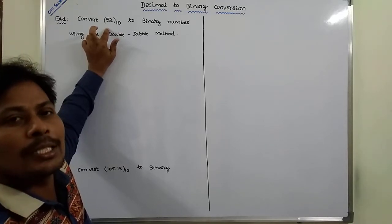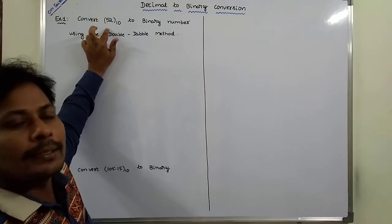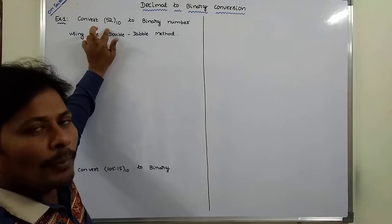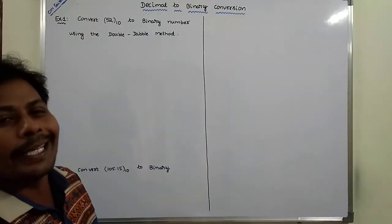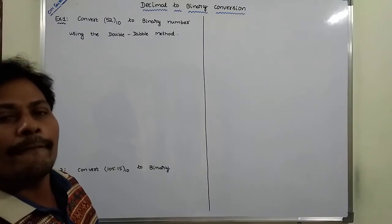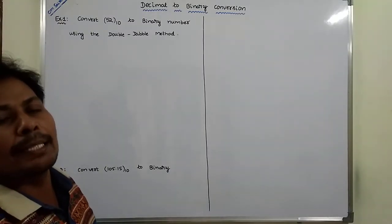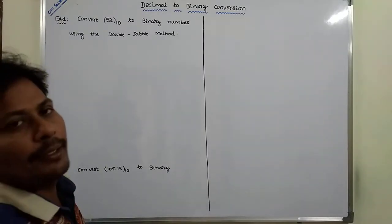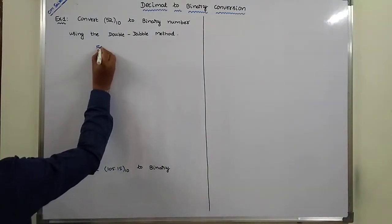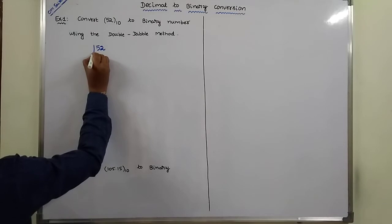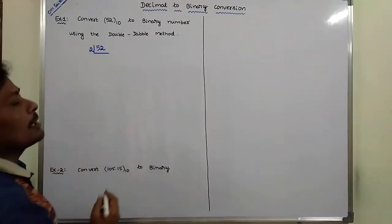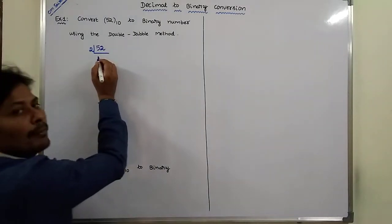Once the quotient 0 is obtained, the remainders can be read from bottom to top. Then we get the equivalent binary integer number for the decimal integer number. Now we take 52 — 52 as a decimal integer number is to be converted into its equivalent binary integer number.